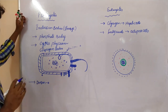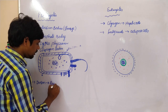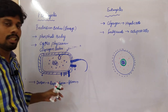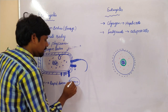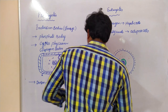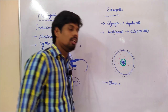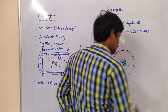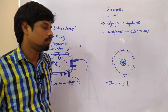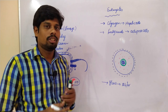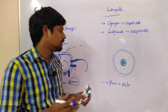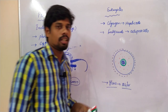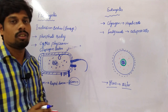Coming to cell division: prokaryotes undergo very rapid division — within a short period of time, 60 minutes. One cell can divide into two cells within 60 minutes. Coming to eukaryotes, it is a slow process. One cell divides into two cells and this division takes 24 hours, involving phases such as G1, S, G2, and the mitotic phases.